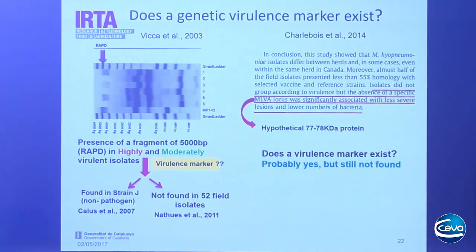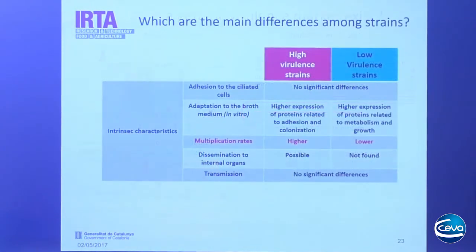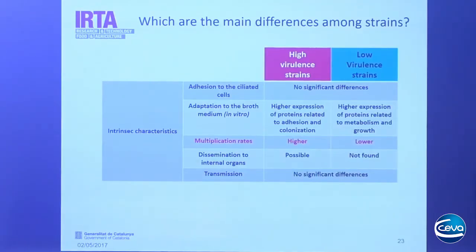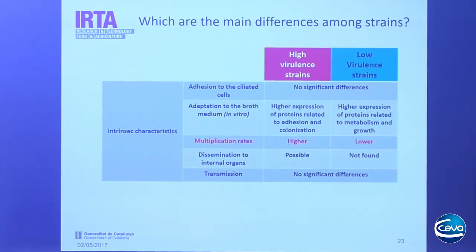In another study, the authors associated the absence of detection of one specific gene with less pronounced enzootic pneumonia or CBPC lung lesions at the slaughterhouse. But as far as I know, nobody else has tested this finding. Does a virulence marker exist? Probably yes, but it still hasn't been found. The main differences among strains relate to intrinsic characteristics. In Mycoplasma pathogenesis, the first step is adhesion to ciliated epithelial cells. It was speculated that high virulence strains would have greater capacity for adhesion — but unexpectedly, no significant differences in adhesion to ciliated cells were found.